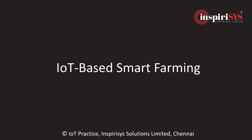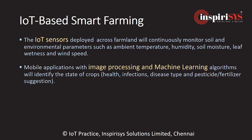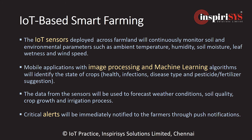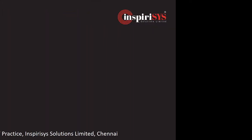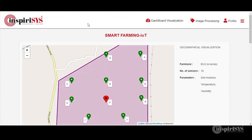IOT-based smart farming system. IOT sensors are deployed across the farmlands to monitor ambient temperature, humidity, and soil moisture. A mobile application identifies crop diseases using machine learning, provides micro weather conditions and crop growth forecasts using sensor data, and sends push notifications to deliver critical alerts to farmers. The map view displays environmental sensors, and the dashboard shows a consolidated view of sensors and their respective locations in the farmland.